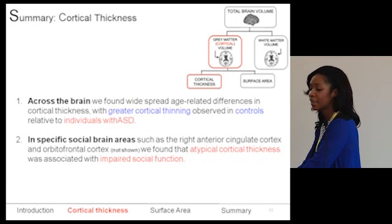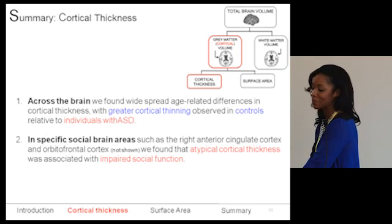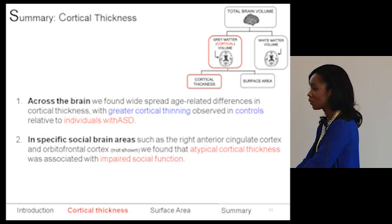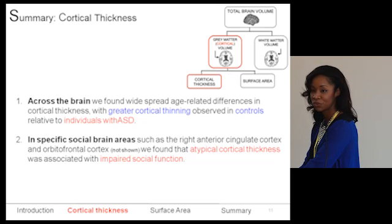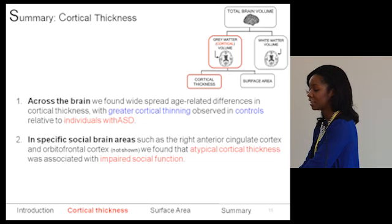In summary, when looking at cortical thickness as one component of gray matter volume, we found widespread age-related differences across the brain. Greater cortical thinning was seen in controls relative to individuals with ASD. And in specific social brain areas, atypical cortical thickness was associated with impaired social function.